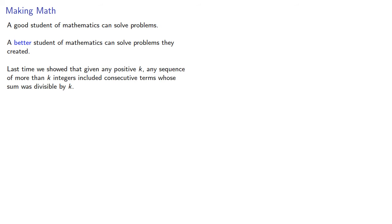Last time we showed that given any positive k, any sequence of more than k integers included consecutive terms whose sum was divisible by k. Could we make the sum equal to k?